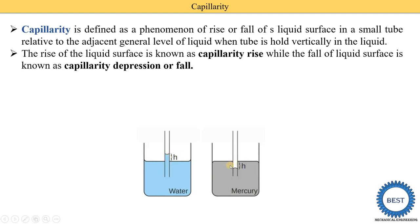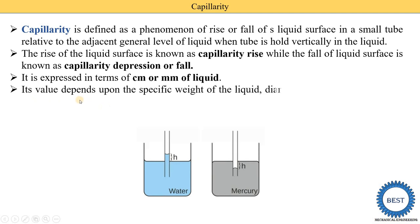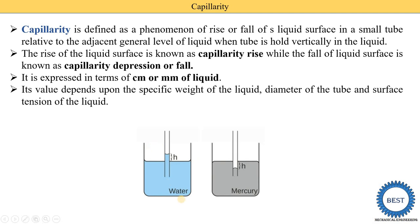The rise of liquid surface is known as capillary rise, while the fall of liquid surface is known as capillary depression or fall. Capillary rise happens in water, and in mercury there is capillary fall. It is expressed in terms of centimeters or millimeters of liquid. Generally the height is measured in mm or centimeters, so capillarity is also expressed in centimeters or mm of the liquid.